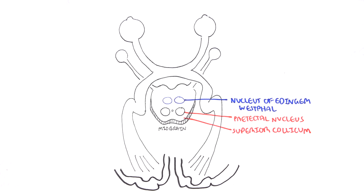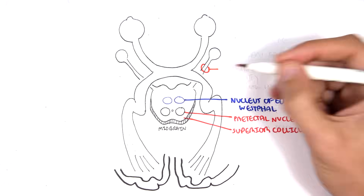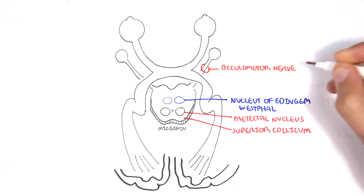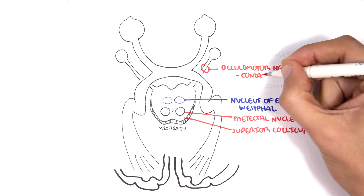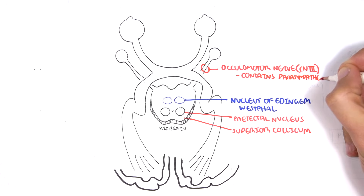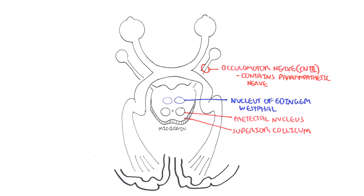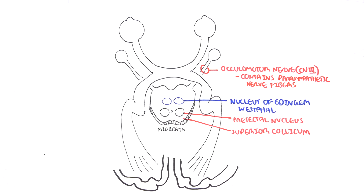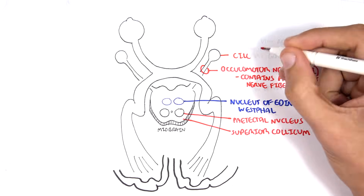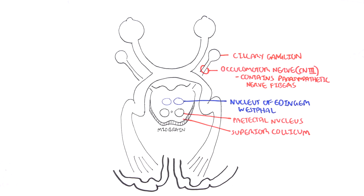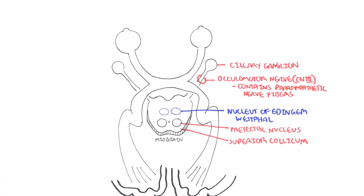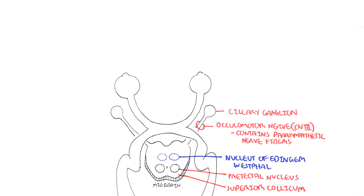The oculomotor nerve will travel along this pathway. It's also important to know that the oculomotor nerve contains parasympathetic nerve fibers — some of them travel along with the oculomotor nerve. The oculomotor nerve will travel towards the ciliary ganglion where it will synapse with another neuron, and this other neuron will then send the signal to the pupil.